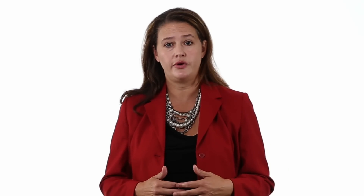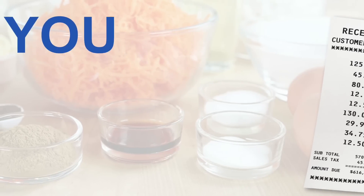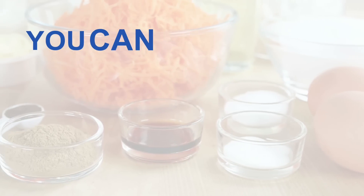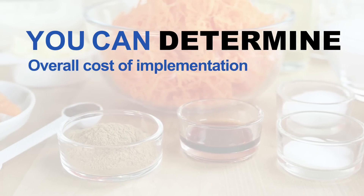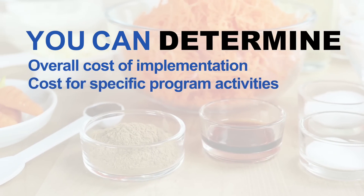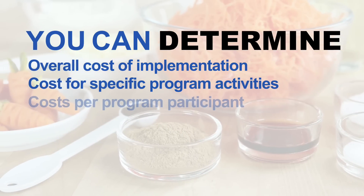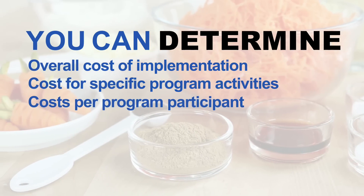These resources can be direct or indirect costs to the program. Once you have the cost of the ingredients, you can determine the overall cost of implementing the program, the cost for specific program activities, and cost per program participant. This information should help you make program decisions and can establish a foundation for other types of analyses.